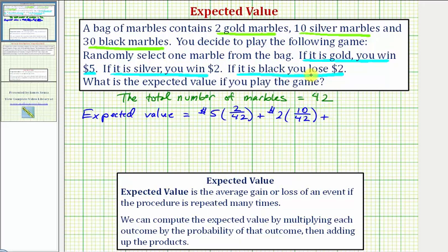Plus the third outcome is that you lose $2, so we'd have plus negative $2 times the probability of losing $2, which is the probability of selecting a black marble. There are 30 black marbles out of 42, so the probability is 30/42.